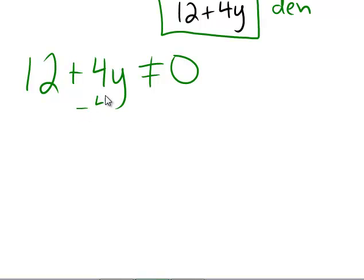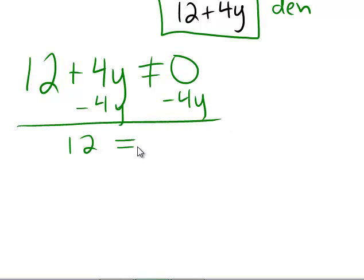To solve this, let's subtract 4y from both sides to yield 12 better not be equal to negative 4y. Because remember, this would cause a 0 in the denominator and that's a very bad thing.